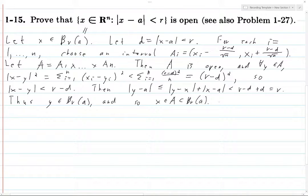Such an A exists for all x in B_r(a), and hence B_r(a) is open. This completes our proof.